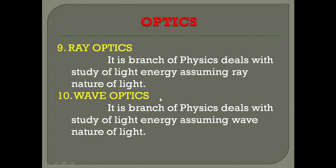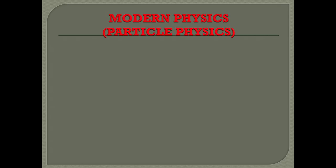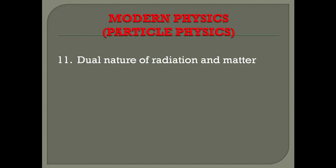The first two chapters of book two — chapters 9 and 10 — cover the maximum study of light under the optics branch. Then comes modern physics, which is the study of atomic or subatomic particles. Chapter 11 is 'Dual Nature of Radiation and Matter,' where radiation means wave and matter means particle — we study how a wave can also be a particle and a particle can also be a wave.